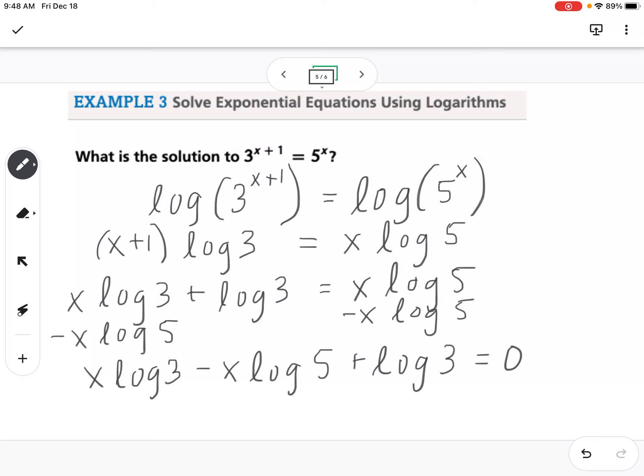Then I'm going to subtract the log of 3 to the other side. So I have x log of 3 minus x log of 5 equals negative log of 3. The reason I'm doing this is I want the variables on one side and my single log values on the other side.